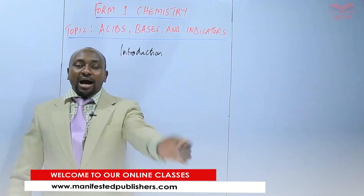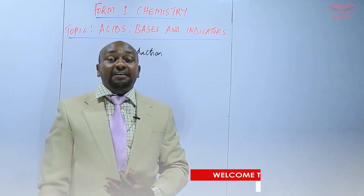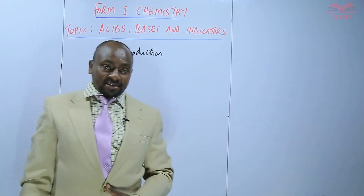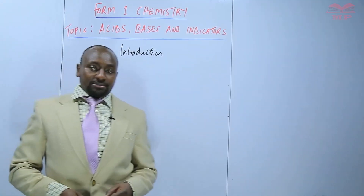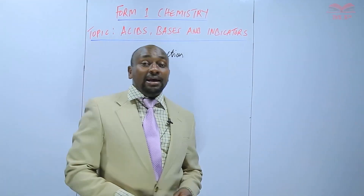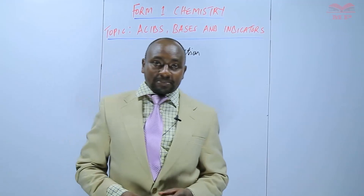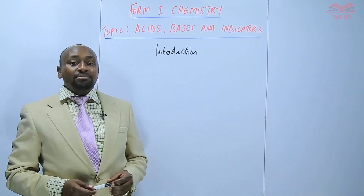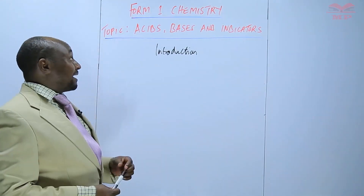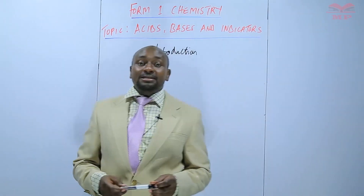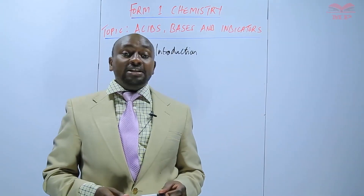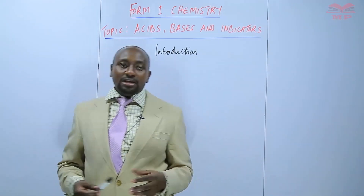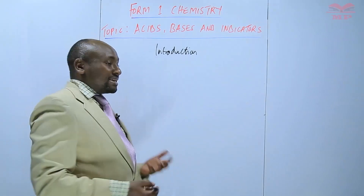In our introduction, we know that we have some substances that have a sour taste and others that have a bitter taste. For example, sour milk and lemon juice have a sour taste. Substances like soaps have a bitter taste. This can be explained by the concept of acids and bases. Substances that have a sour taste are said to be acidic — lemon juice, sour milk, citrus fruits, and so on.